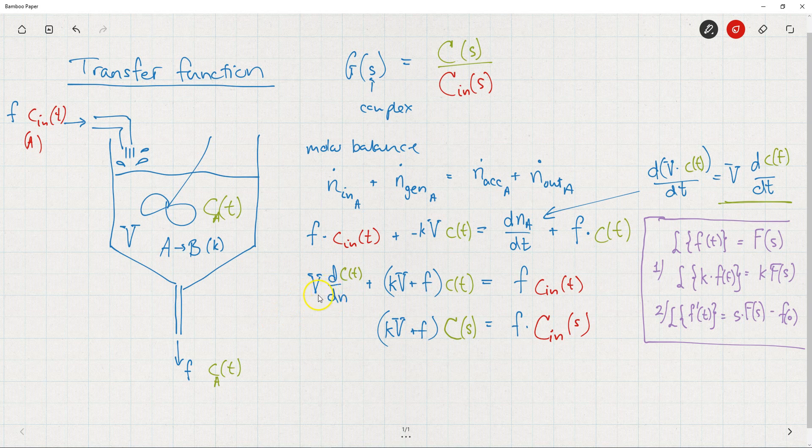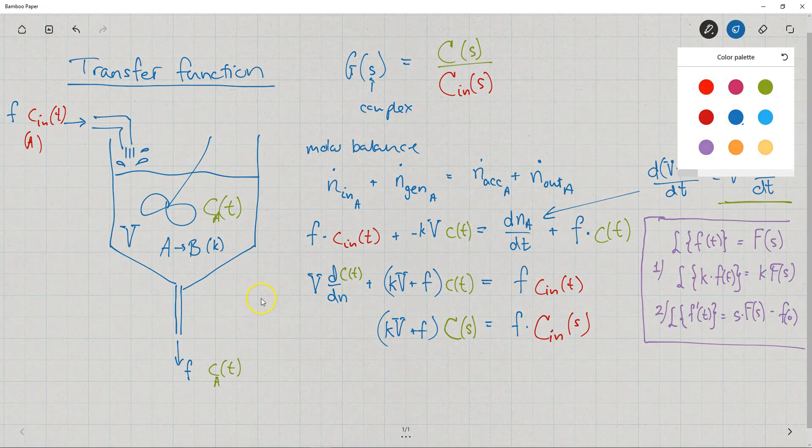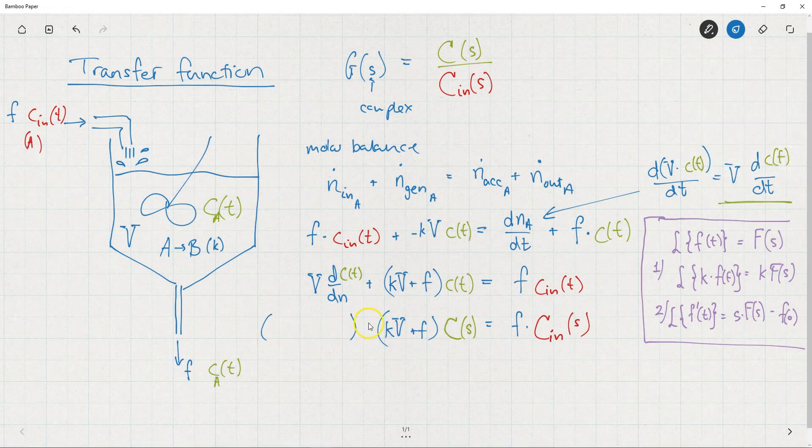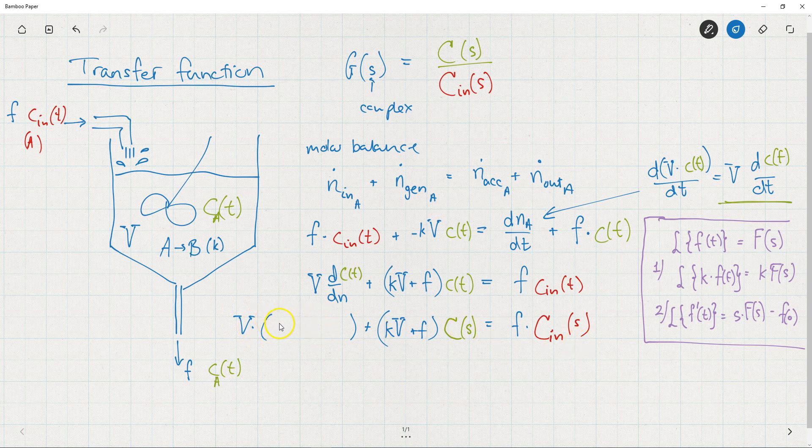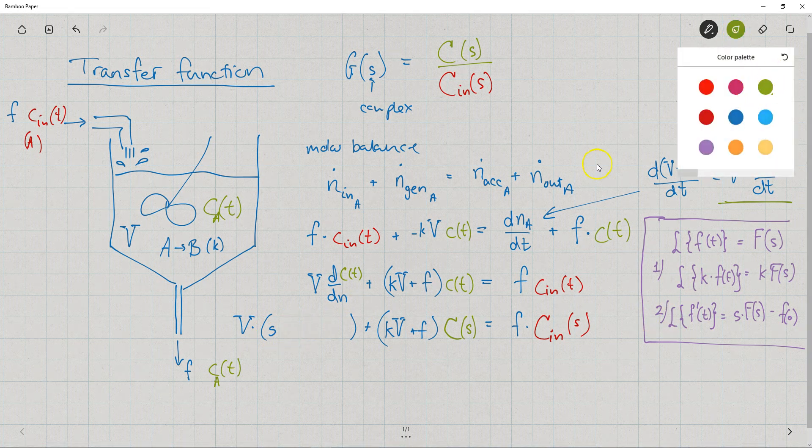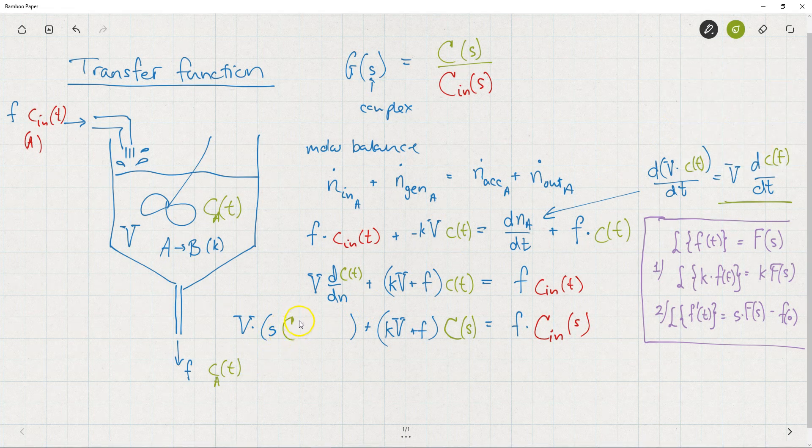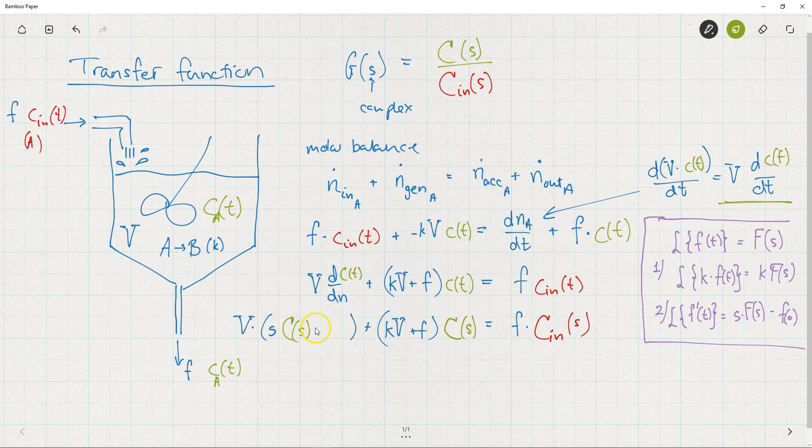And then the first term over here, the derivative of C. When I Laplace transform that, I get this expression here. That's rule number two. And then I have a constant multiplied. I use rule number one. Altogether, what I get is V times S times the Laplace transform of C. That's capital C of S, and then minus C evaluated at zero.